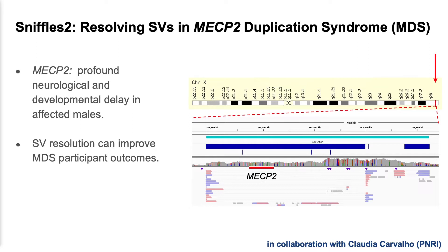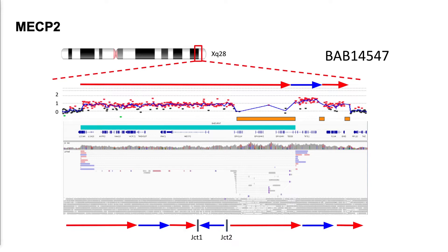We applied this in a cohort of 31 genomes sequenced with Nanopore for a Mendelian disease study. The phenotype was profound neurological and developmental delay in affected males, caused by the MECP2 gene on the X chromosome - a particularly tricky spot. You can see the annotation of segmental duplications in orange, and on top the microarray copy number data showing a duplication in this region. Interestingly, indicated by a blue arrow, there is actually a triplication that is inverted - so we have a duplication on top of a triplication, and the whole thing is inverted.